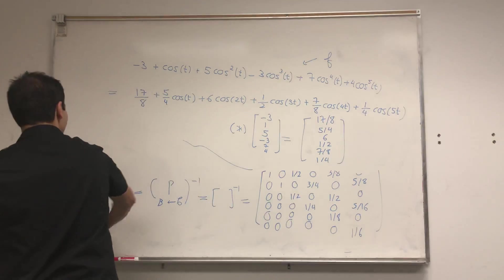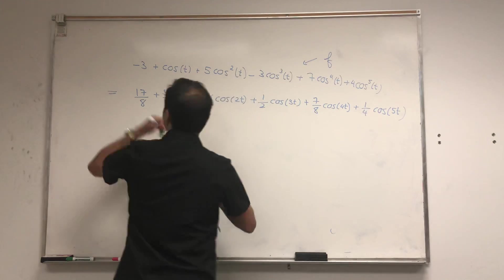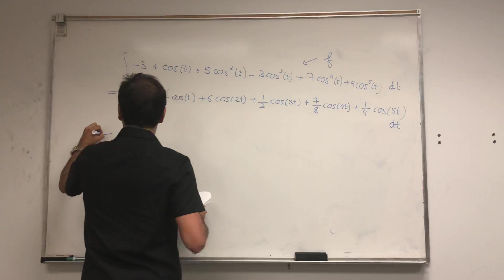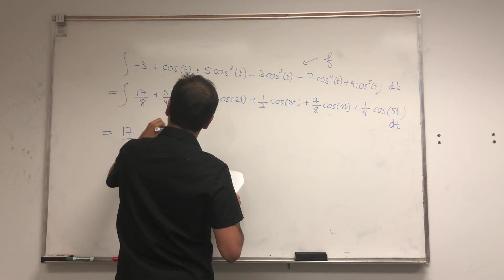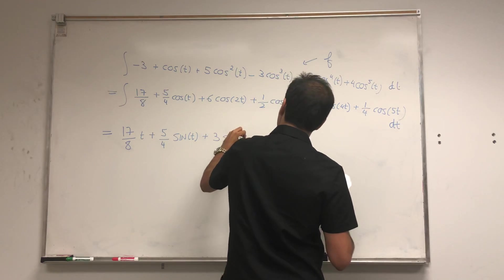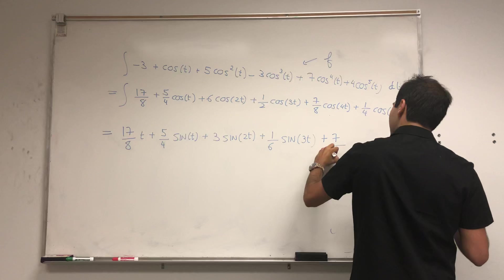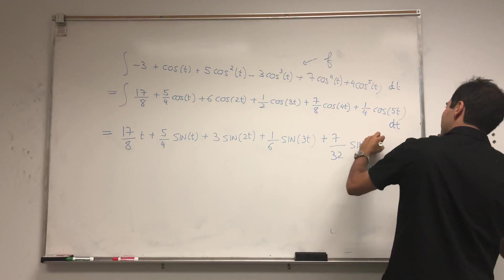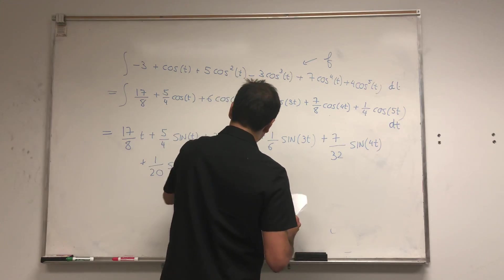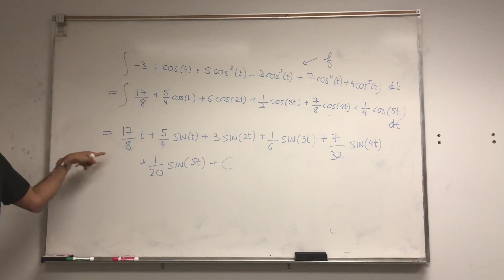In other words, we took this complicated function and wrote it in terms of easier functions — and now the fun begins. The function that was very hard to integrate becomes easy. Taking the integral gives: 17/8 t plus 5/4 sine t plus 3 sine 2t plus 1/6 sine 3t plus 7/32 sine 4t plus 1/20 sine 5t plus a constant. How cool is that? This is linear algebra.